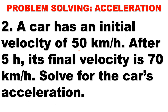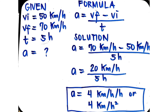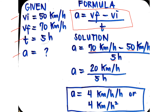Another acceleration problem: A car has an initial velocity of 50 km/h. After 5 hours, its final velocity is 70 km/h. Solve for the car's acceleration. Given: Vi = 50 km/h, Vf = 70 km/h, time = 5 hours. Solution: acceleration = (70 − 50) ÷ 5 = 20 ÷ 5 = 4 kilometers per hour squared. Every hour, the object speeds up by 4 km/h.